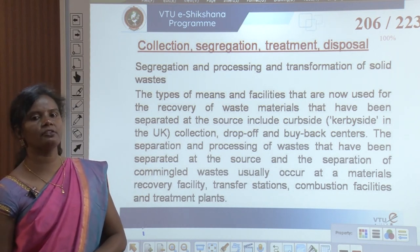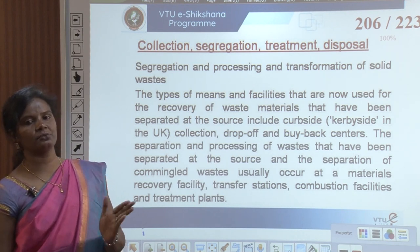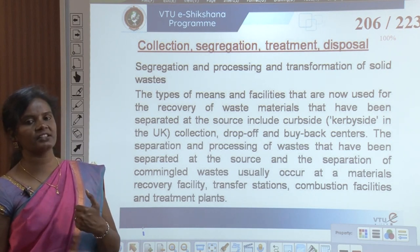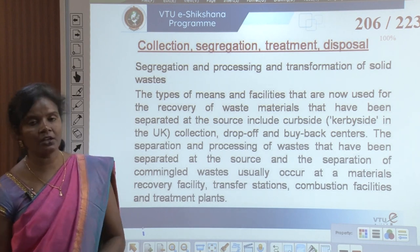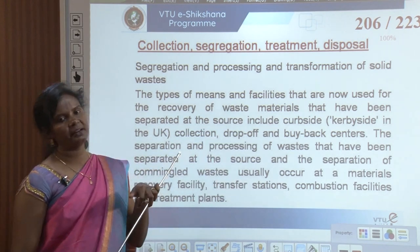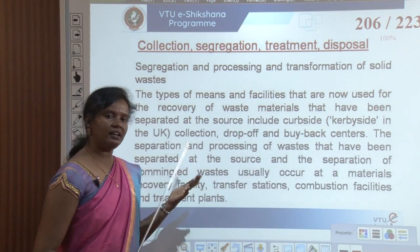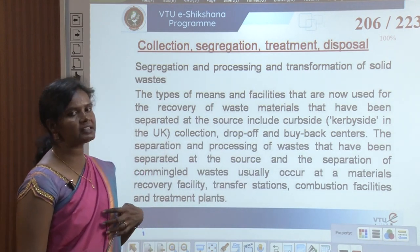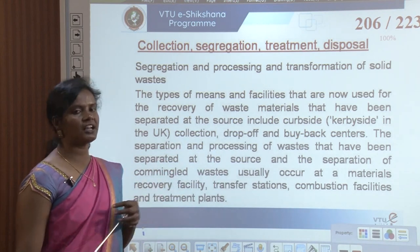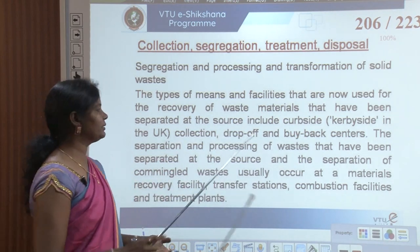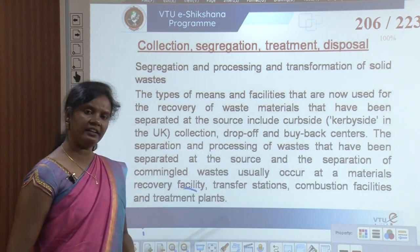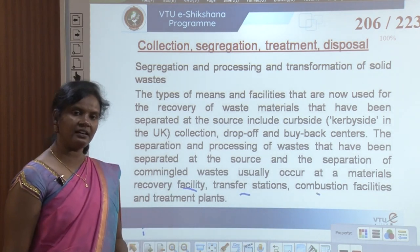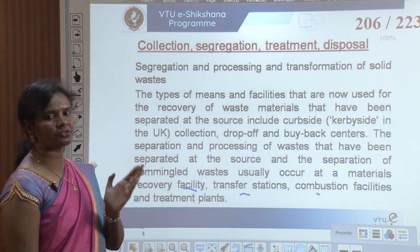The separation and processing of waste that has been separated at the source, and the separation of commingled wastes, usually occur at materials recovery facilities, transfer stations, combustion facilities, and treatment plants. From the collection point, waste is transferred to different sectors where segregation must happen mandatorily — at material recovery facilities, transfer stations, combustion facilities, and treatment plants.